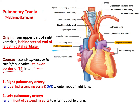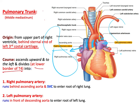The right pulmonary artery passes behind the ascending aorta and behind the superior vena cava until it reaches the root of the right lung. The left pulmonary artery is positioned in front of the descending aorta and enters the root of the left lung.